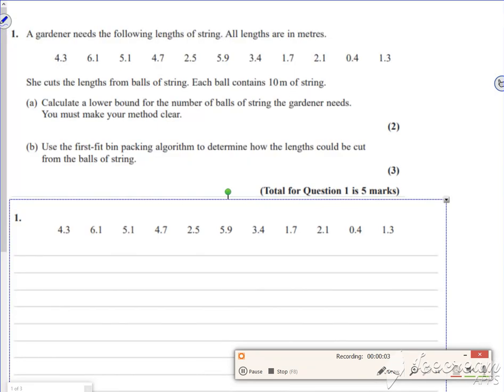Hi, I thought I might as well run through the lower bound and just quick bin packing. So it's not a decreasing one where you do the sort first, it's just bin packing. Let's have a look at this one. This is out of the 2022 paper. A gardener needs the following lengths of string, all lengths in meters. She cuts them into 10 meter lengths of string. So your bin is 10 long.